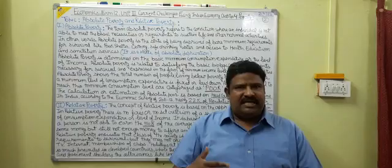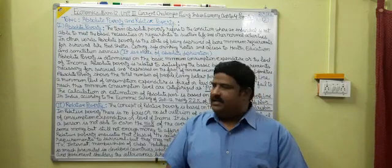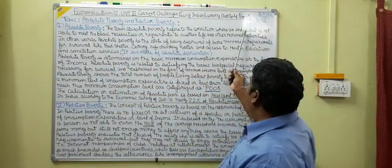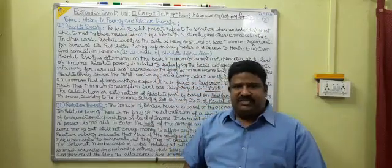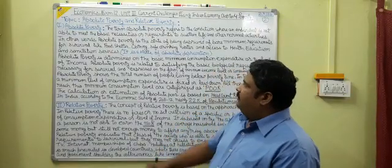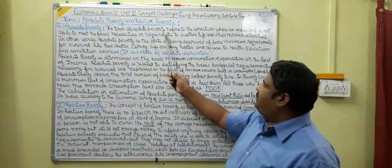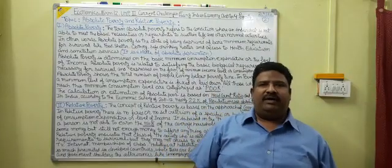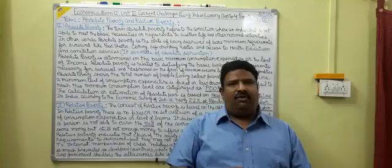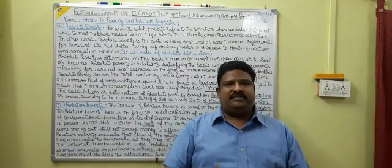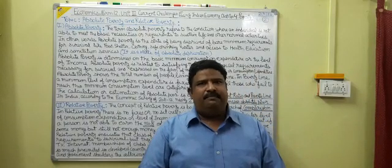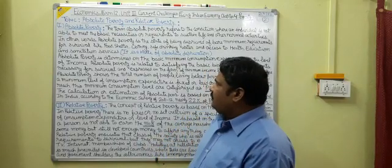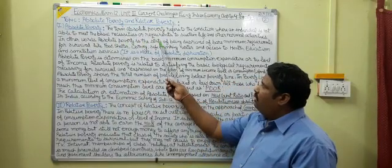The fixed criteria is regarding the consumption expenditure or income level which is required to fulfill the basic minimum requirements - the bare minimum requirements necessary for the survival of a person. Absolute poverty refers to the condition where an individual is not able to satisfy or fulfill the basic necessities required to sustain life and other normal activities.